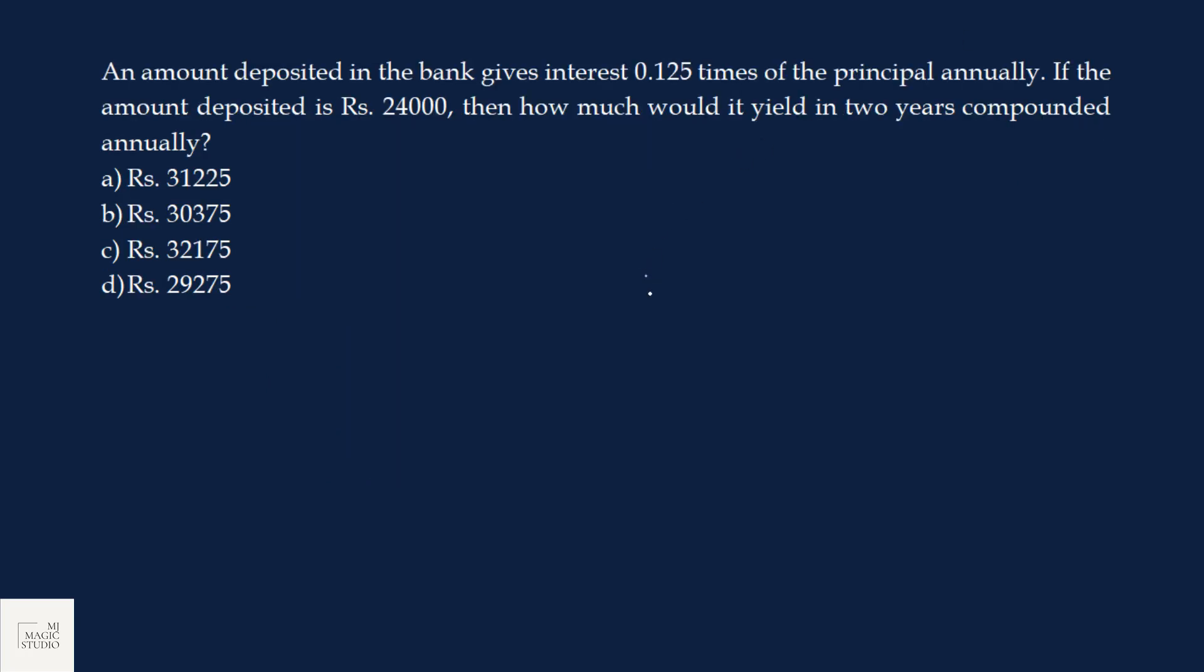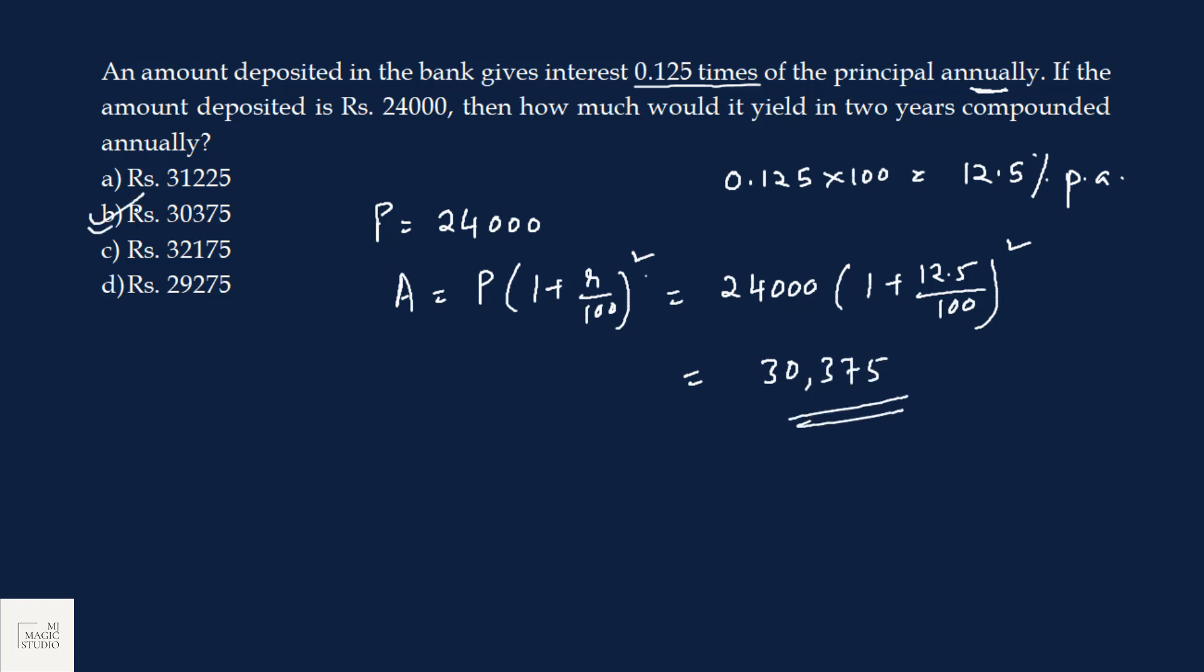An amount deposited in the bank gives 0.125 times of the principal annually. That means interest rate is 0.125 × 100 = 12.5% per annum. If the amount deposited is 24,000, then how much would it yield in 2 years compounded annually? We use the formula A = P(1 + R/100)^2 = 24,000 × (1 + 12.5/100)^2 = 30,375. Option B is the pick.